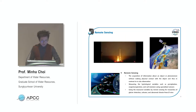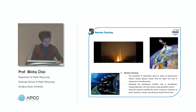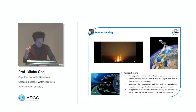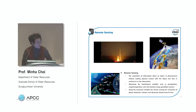Remote sensing techniques are currently used in a lot of fields including ecology, hydrology, and rural resources management. In Korea, we have various types of satellites. Currently we have the COMS satellite, which is the seventh-generation geostationary satellite providing hydrology and hydrometeorology variables.